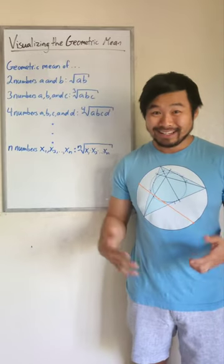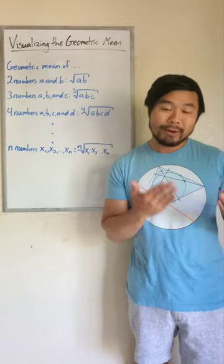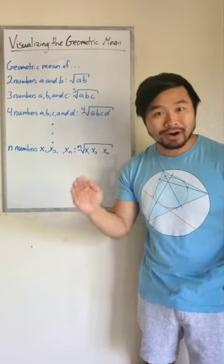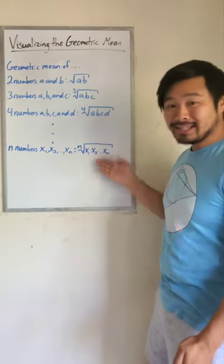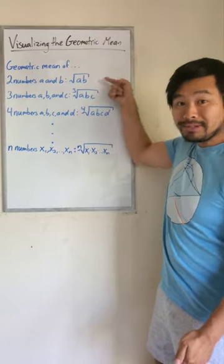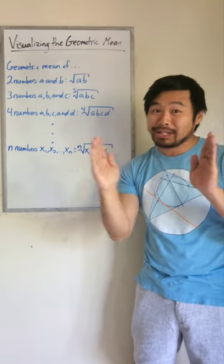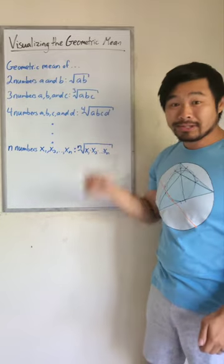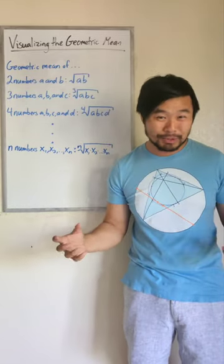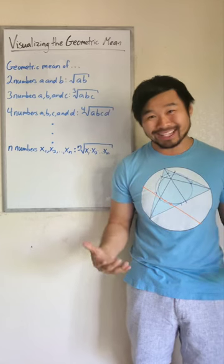And we can keep going with this. Now remember, for geometric mean, we want to keep the product, but make sure that all of the numbers are the same. And this will do that. For two numbers, we can think about turning a rectangle into a square. And for three numbers, we can think about turning a rectangular prism into a cube, and then finding the side length.